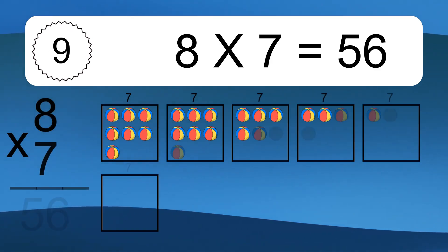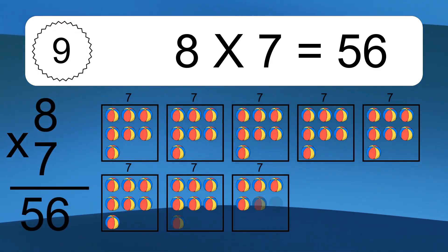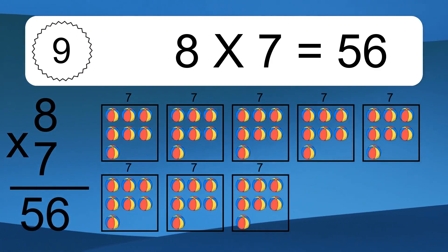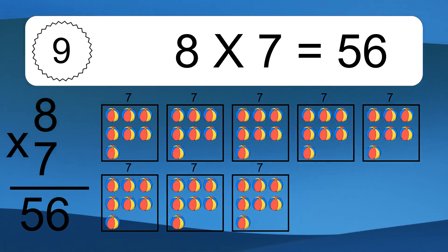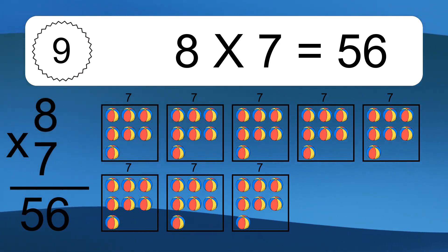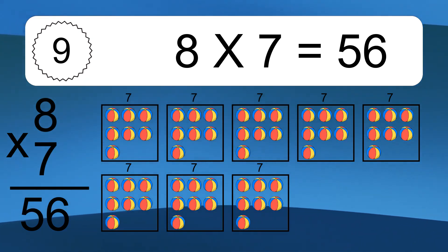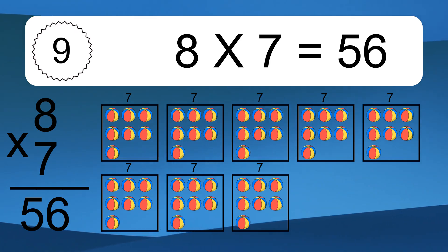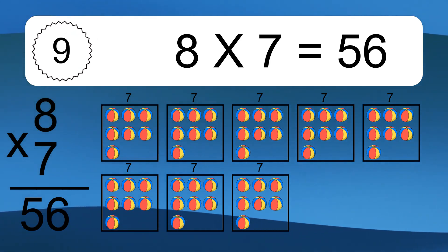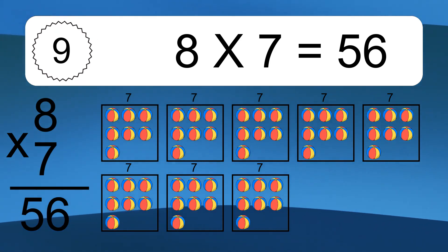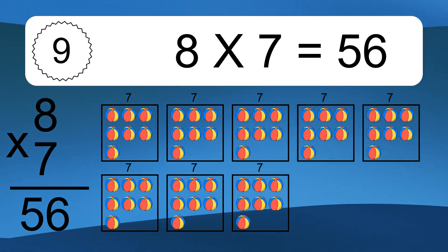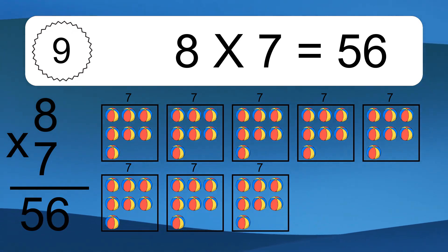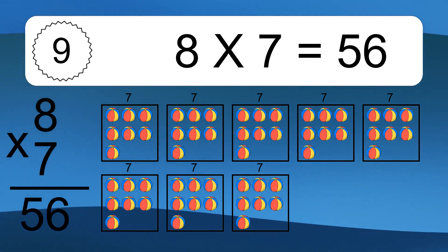8 times 7 equals 56. We have 8 boxes and each box has 7 colorful balls inside. If you count all the balls in all the boxes together, you will have 8 times 7 balls. This equals 56 balls.